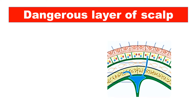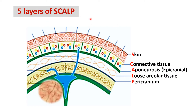This video is on the dangerous layer of scalp — which layer is the dangerous layer of scalp and why that layer is known as the dangerous layer. Let us first see the five layers of the scalp from superficial to deep. The first one is the skin, then the superficial fascia or connective tissue, the third layer is the epicranial aponeurosis along with the occipitofrontalis muscle, then the fourth layer is the loose areolar tissue, and the last layer is the pericranium, which is the periosteum of the cranial bones forming the skull cap or vault.